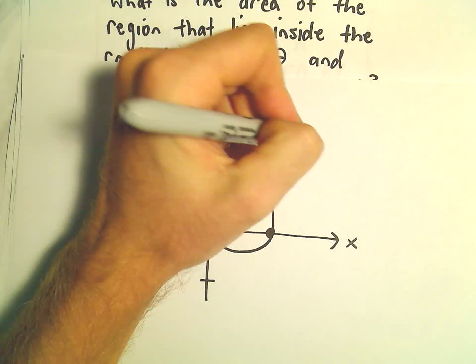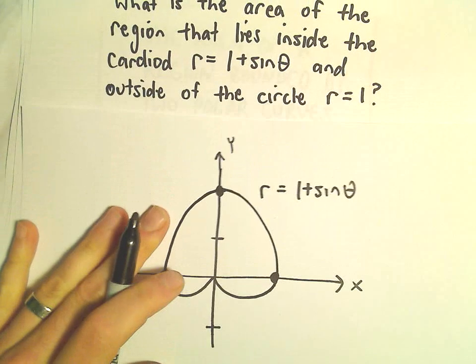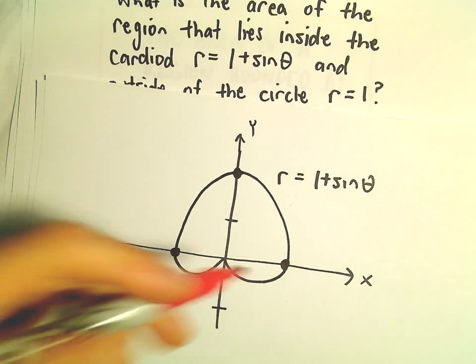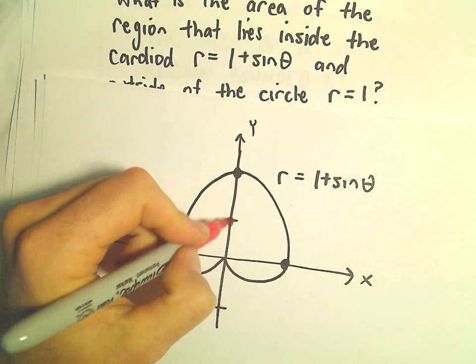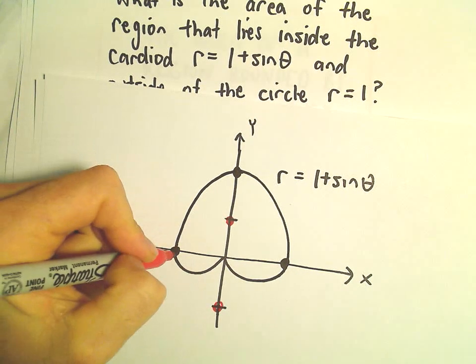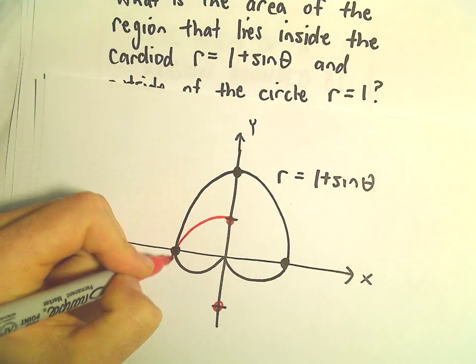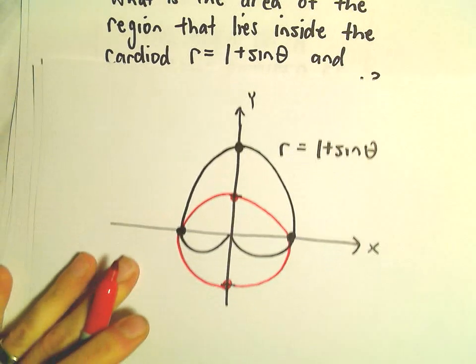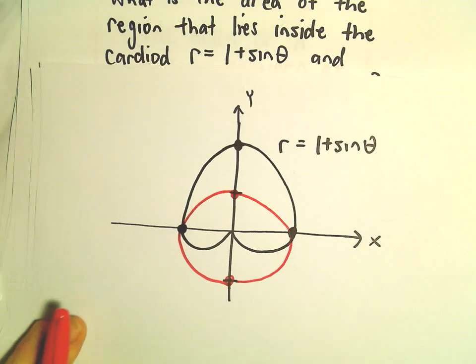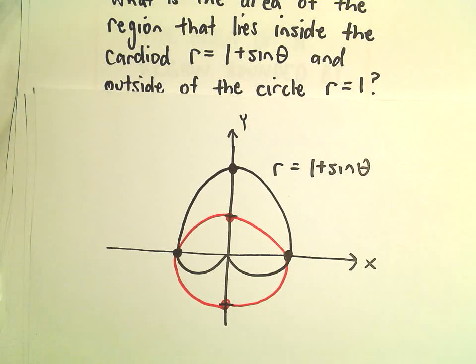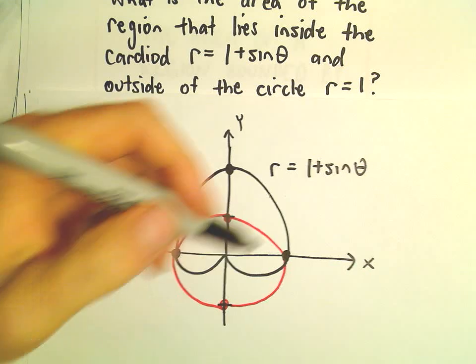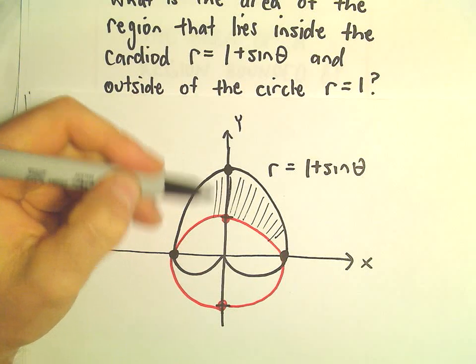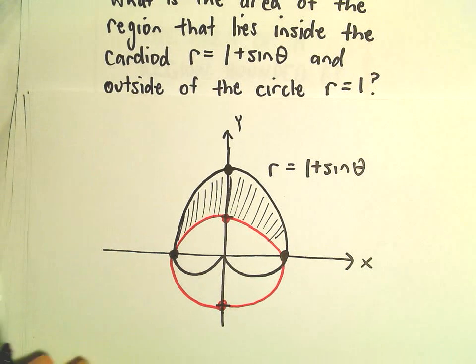So there's our rough little cardioid here, r equals 1 plus sine theta. Well, r equals 1, that's just a circle with radius 1. So this was 1 unit, 1 unit, that's 1 unit, and 1 unit. So our little circle here. So we're trying to find the area that's inside the cardioid but outside the circle. So we're looking for this little shaded area right there.